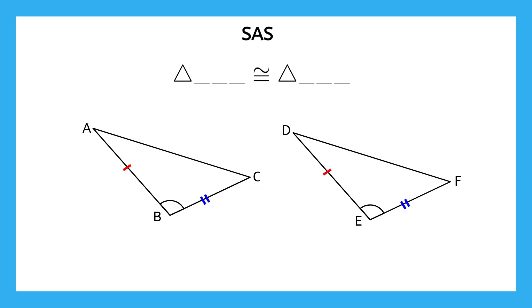The placement of our letters is very important, so follow along closely. Let's say I choose to put letter A from the first triangle here — then which letter from the second triangle would need to go here? Vertex A is between the side with one red marking and the side without a marking at all. The vertex on the other triangle that is also between the side with one red marking and the side with no marking is vertex D, so that has to go first. Now it is up to you which order you put your letters, as long as the letters for the second triangle are written in the correct order to correspond to the first triangle.